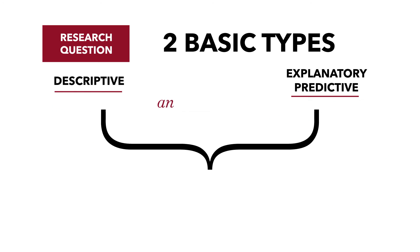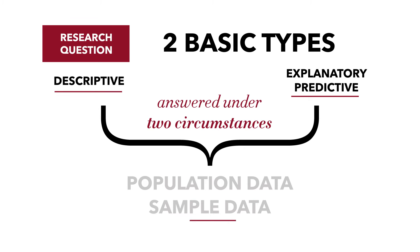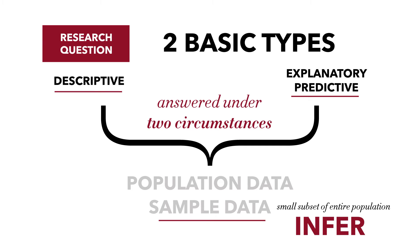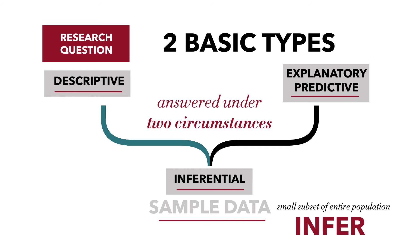These questions can be answered under two circumstances: when we have population data, or when we have sample data. A sample is just a relatively small subset from the entire population. When we have sample data, we have to do an additional step — we have to infer how well our sample represents our population. So we're going to focus on descriptive statistics, explanatory or predictive statistics, and inferential statistics. The defining feature of inferential statistics is whether we have sample data.